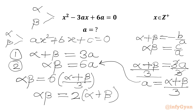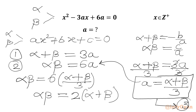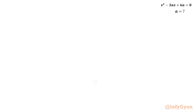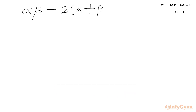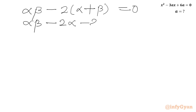Let a = (alpha + beta)/3 — equation number 3. Now bringing the right side to the left: alpha·beta - 2(alpha + beta) = 0. Expanding, we write alpha·beta - 2·alpha - 2·beta = 0.